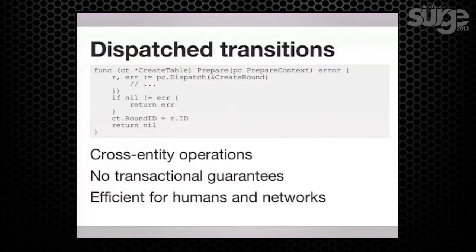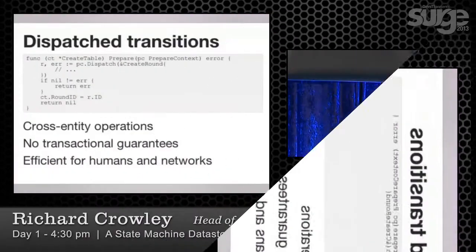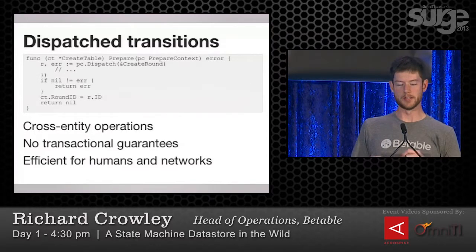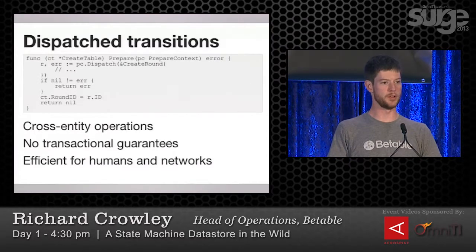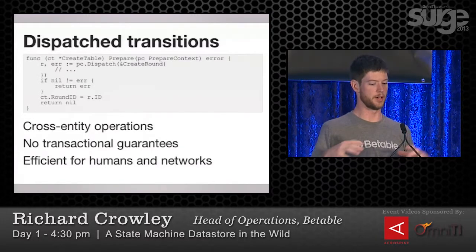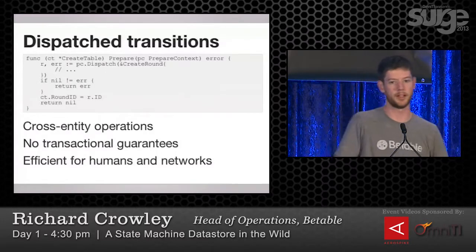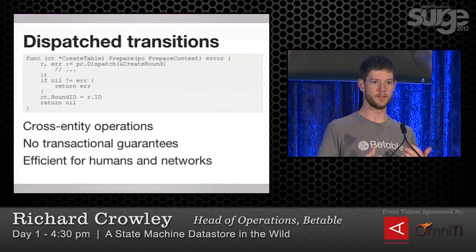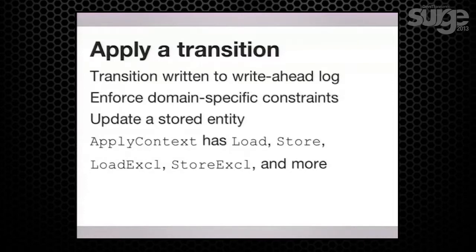Dispatching deserves a little more detail, because it's a sort of hack to build cross-entity operations. It's not a transaction in the sense that if you go and do something over there and fail, you've necessarily failed here, or that if this transition fails the dispatched ones are rolled back. It's optimistic. More than anything, it's an efficiency for our developers and for our networks to move transitions around. So we can do something like when we create a table, we create a round for it to have something when it begins.